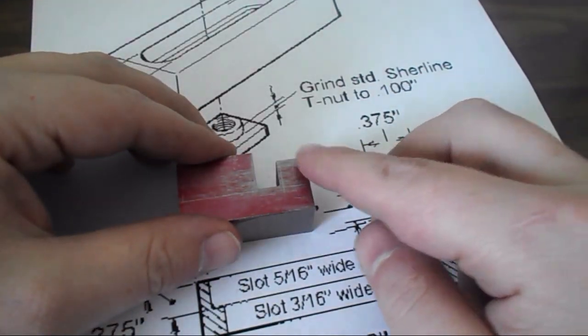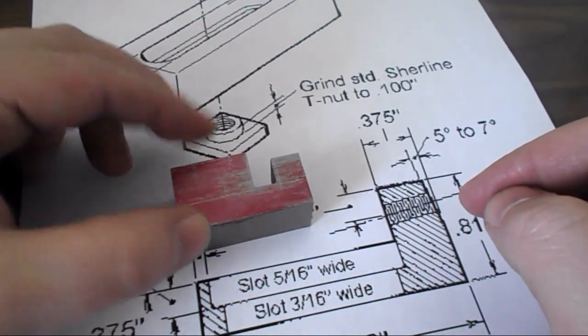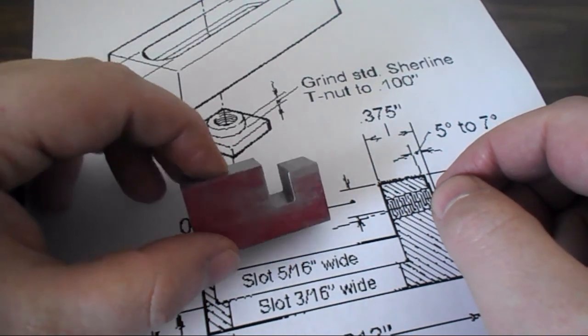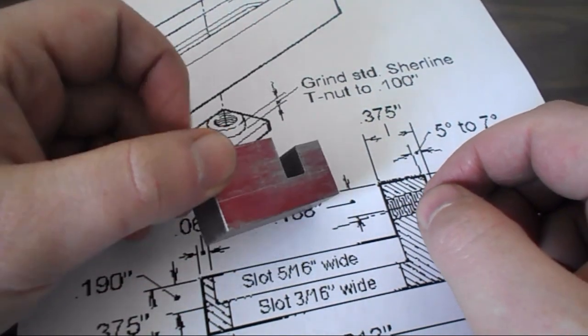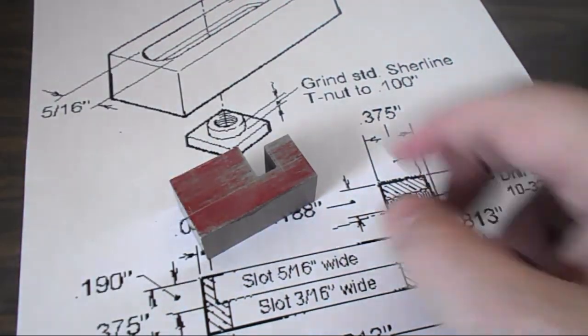And then next time just do the five-degree angle with the hole and the slots for the hold-down. So we'll finish that up in the next part. Thanks for watching.